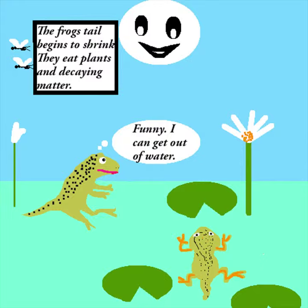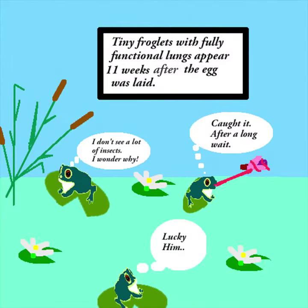The frog's tail begins to shrink. They feed on plants and decaying matter. Tiny froglets with fully functional lungs appear 11 weeks after the egg was laid.